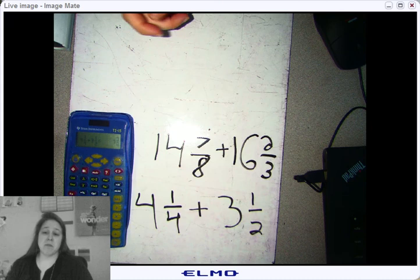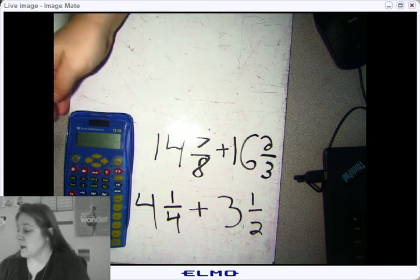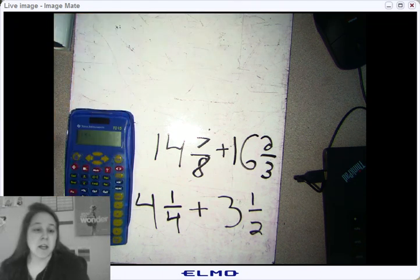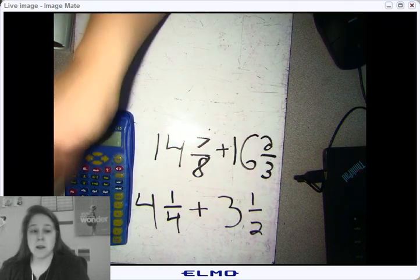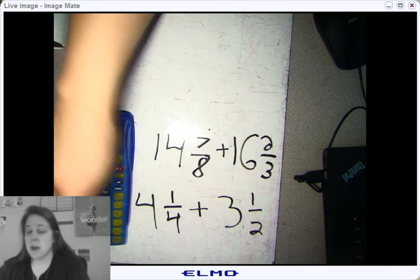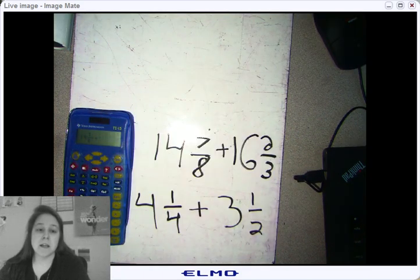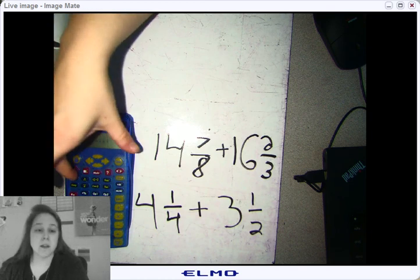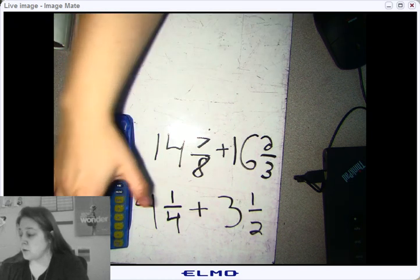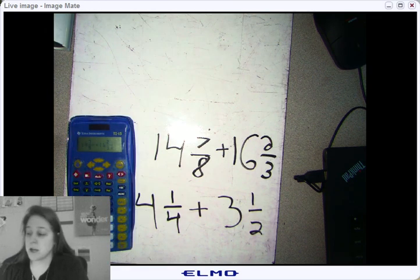I could re-add it on paper, but I'm going to do it here on the calculator. Hit 14, then hit the Unit button, then hit the seven, then hit the N button, then hit the eight. Hit the plus sign, hit 16, hit the Unit button, hit two, hit the N button, and hit three. Now you can hit the equal sign.